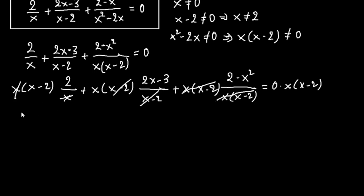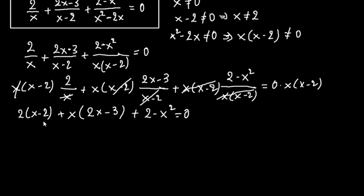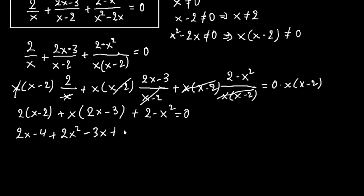After cancellation, we have 2 times x minus 2 plus x times 2x minus 3 plus 2 minus x squared equals 0. Expanding gives us 2x minus 4 plus 2x squared minus 3x plus 2 minus x squared equals 0, and finally x squared minus x minus 2 equals 0.